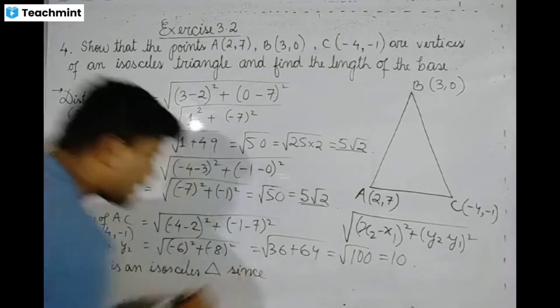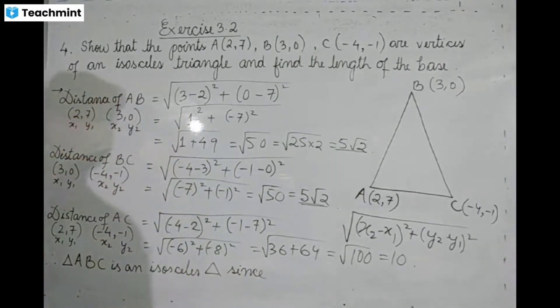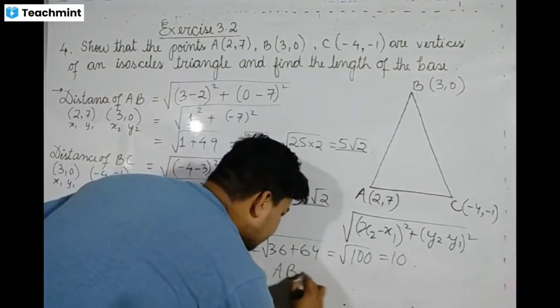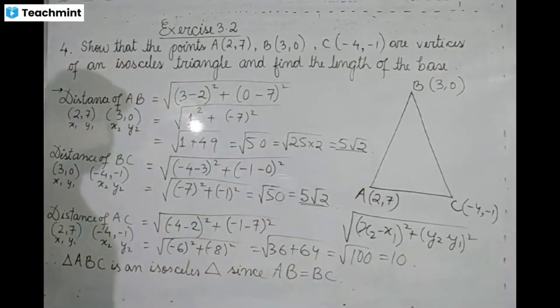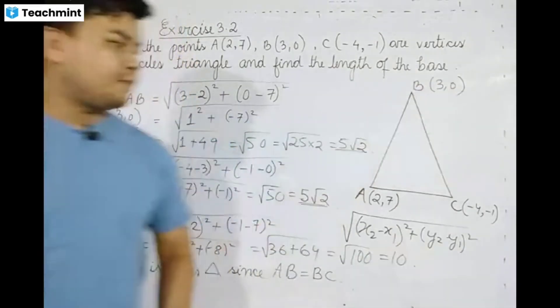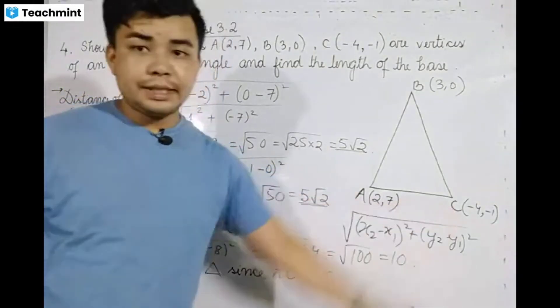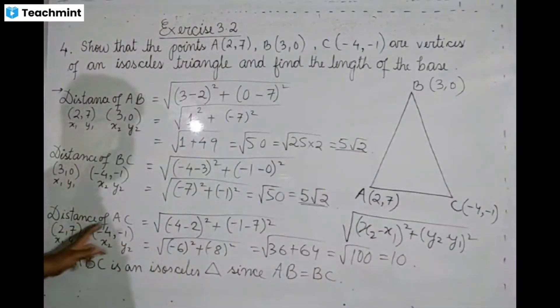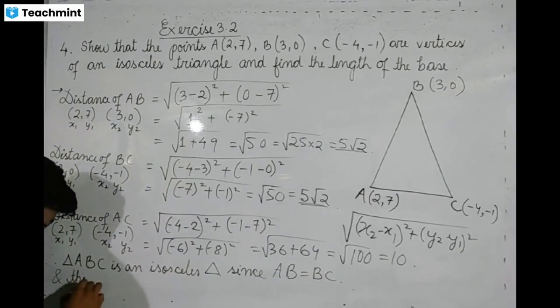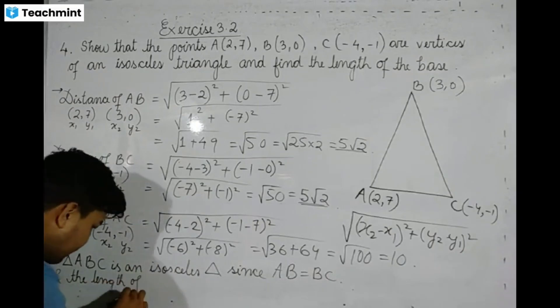We have proved it's an isosceles triangle. Now we need to find the base. Since AB and BC are equal sides, AC must be the base. The length of the base is 10.